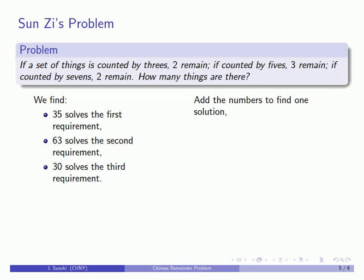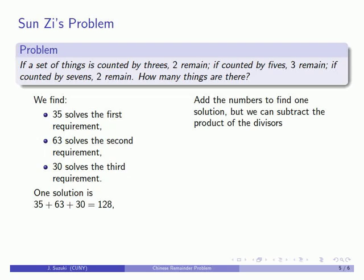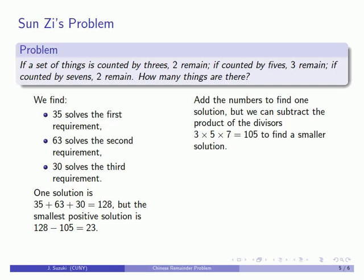One solution is found by adding all three numbers together: thirty-five plus sixty-three plus thirty equals one hundred and twenty-eight. But we can also find smaller solutions by subtracting the product of all of the divisors — three, five, and seven. Three times five times seven is one hundred and five. So subtracting one hundred and five gives the smallest positive solution: one hundred and twenty-eight minus one hundred and five equals twenty-three.